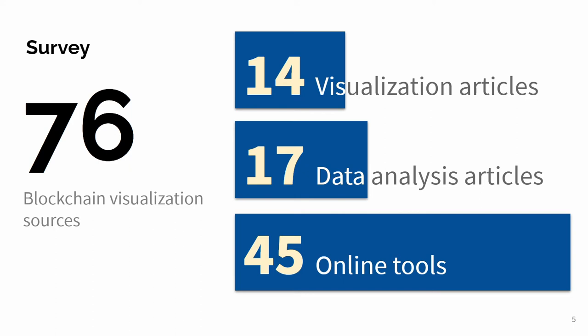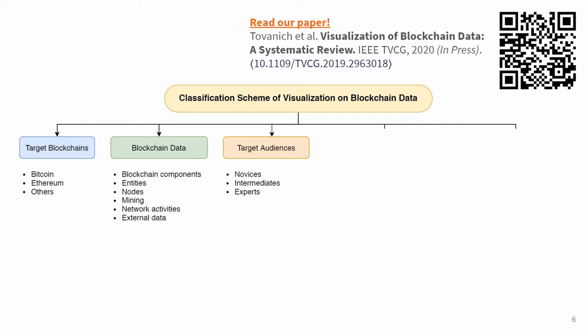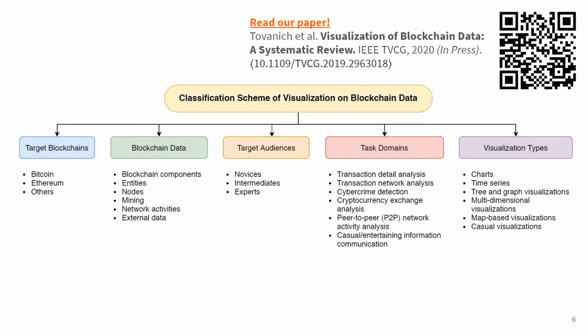We assessed those visualizations in detail and came up with five features to classify blockchain visualization sources: 1. Target blockchain, 2. Blockchain data, 3. Target audience, 4. Task domain, 5. Visualization types. Due to the limited time of the presentation, I will just briefly explain each classification scheme. For more detail, I would like to invite you to read our full paper.